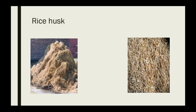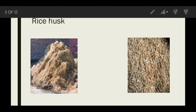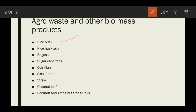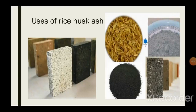These are the typical agro-wastes. We have rice husk, rice husk ash, and bagasse. Bagasse is nothing but the pulp of the sugarcane after squeezing out all the liquid — it is a by-product or waste produced from the sugarcane industries. Next we have the sugarcane tops — once the harvest of the sugarcane is done, the tops and leaves of the sugarcane remain.